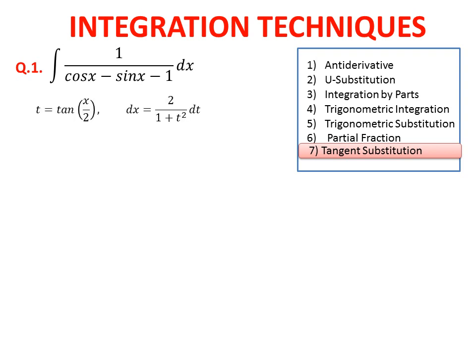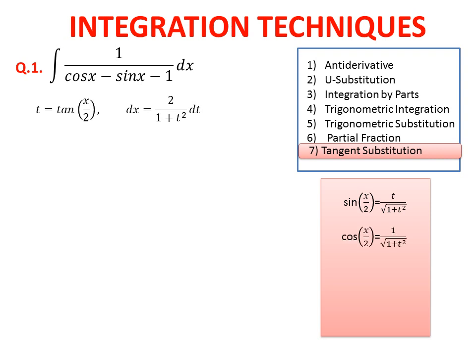For tangent substitution, we let t equal to tangent of x over 2. We differentiate and plug in the value of secant to get dx. We find that sin(x/2) is t over the square root of (1 + t²). Using simple algebra, we get sin x and cos x in terms of t with the complete angle. These are the values we need to plug in.